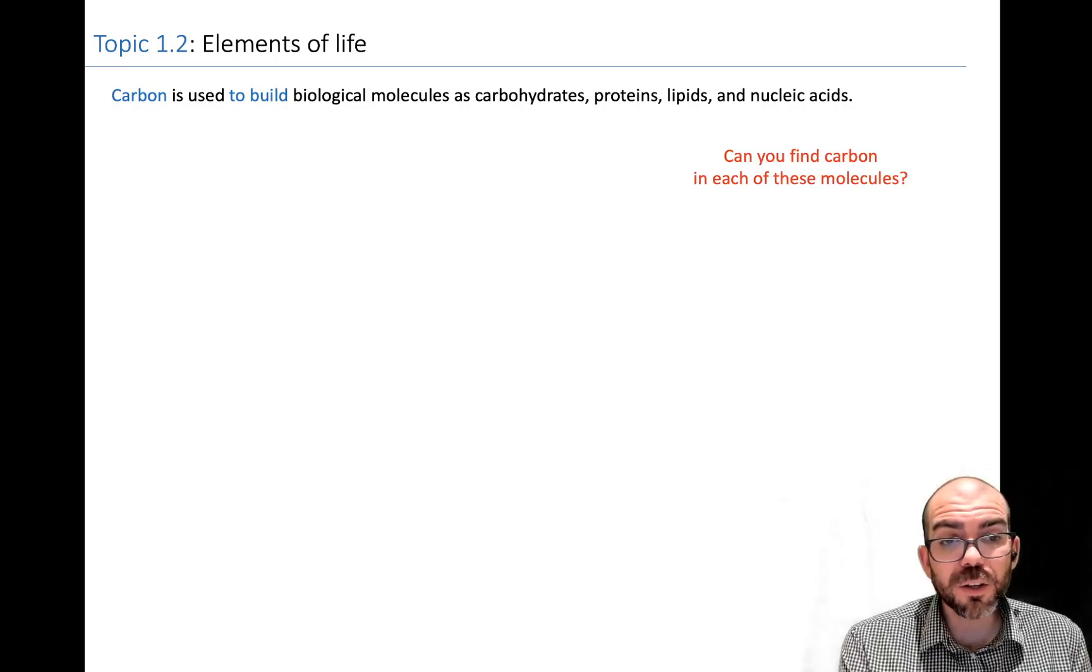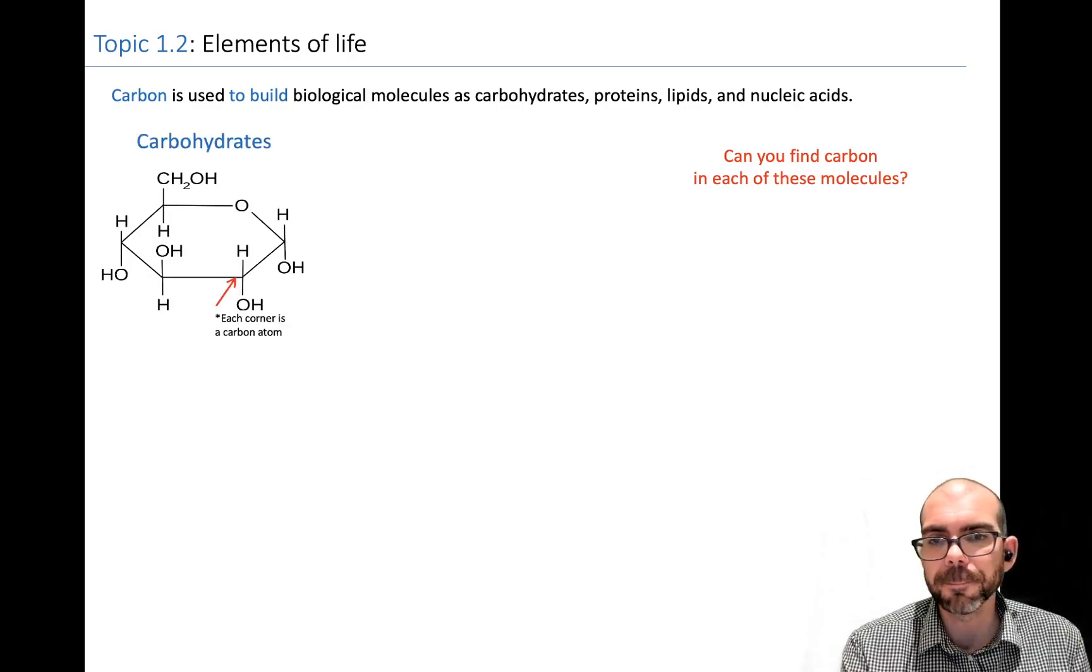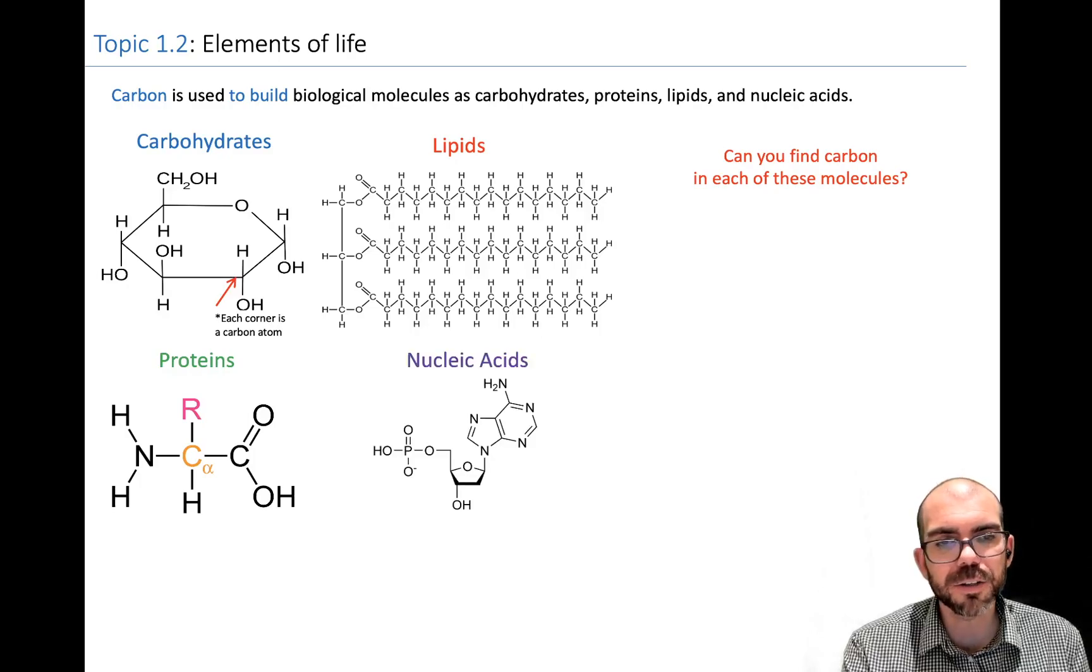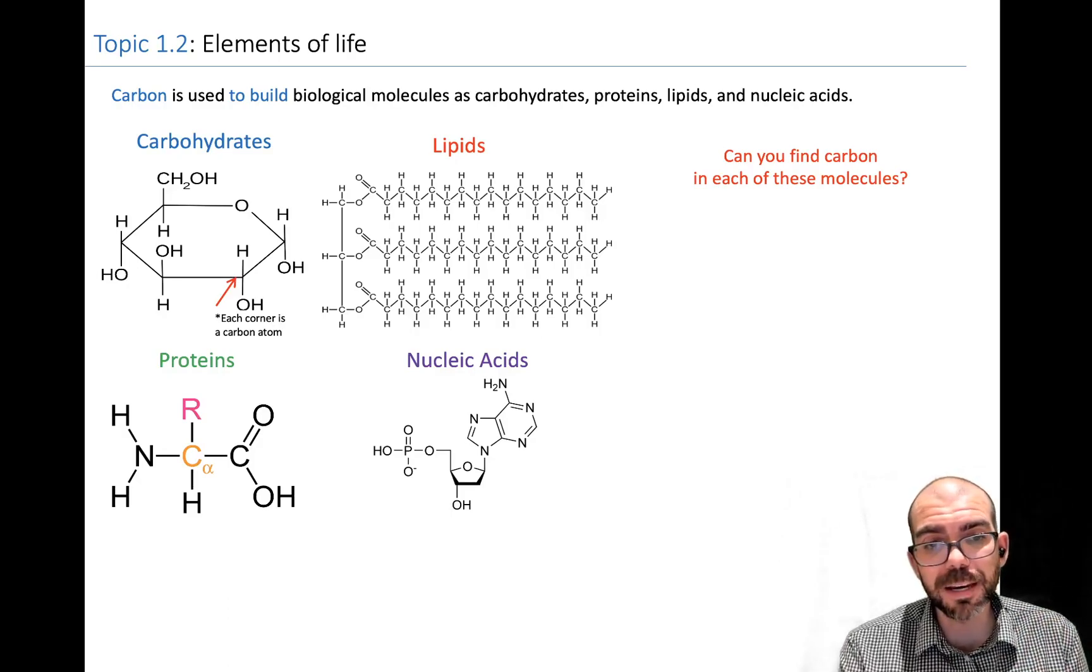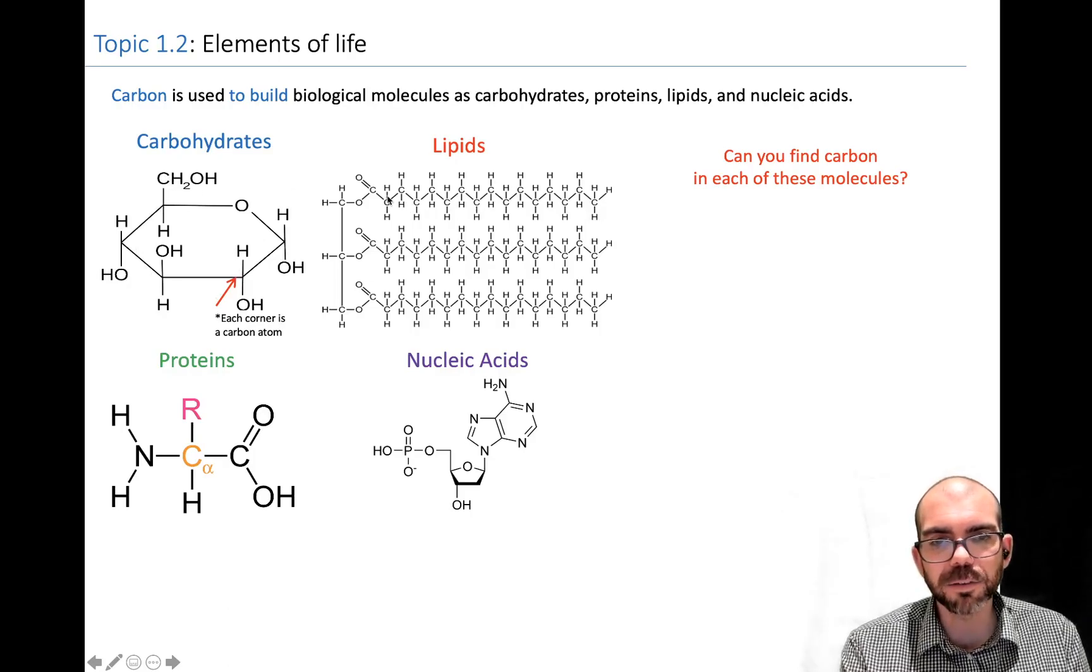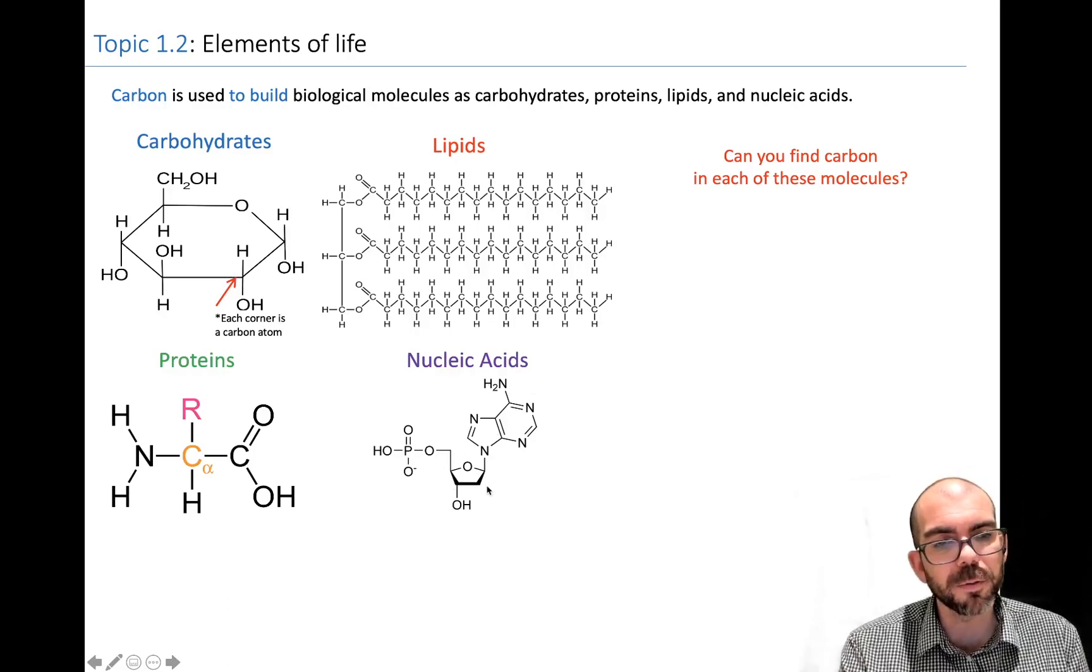Let's see if we can see where is the carbon in the big four macromolecules we need to learn about. Here's a carbohydrate, a lipid, a protein, and a nucleic acid. Looking at these four, can you find carbon atoms in each? Carbohydrates, you can see every corner of this carbon ring has a carbon. Lipids have long chains of hydrocarbons. Proteins have a central carbon and pretty much always a carbon on the side. And nucleic acids are made up of a carbon ring.